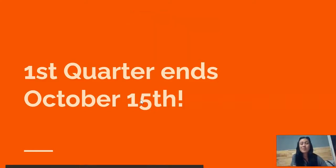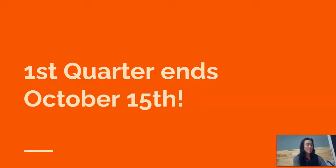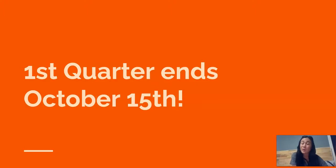First quarter ends October 15th — that is only 15 days away. I sent emails to students and parents who have a D or lower. You do not want to fail English as a freshman because you will have to retake first quarter as a sophomore. If you have any missing work, I'm being lenient and will still take it for partial credit. Please turn it in, then email me so I know to grade it. All of that needs to be done before October 13th because my grades are due the 15th. Work on missing assignments a little bit at a time over the next two weeks.